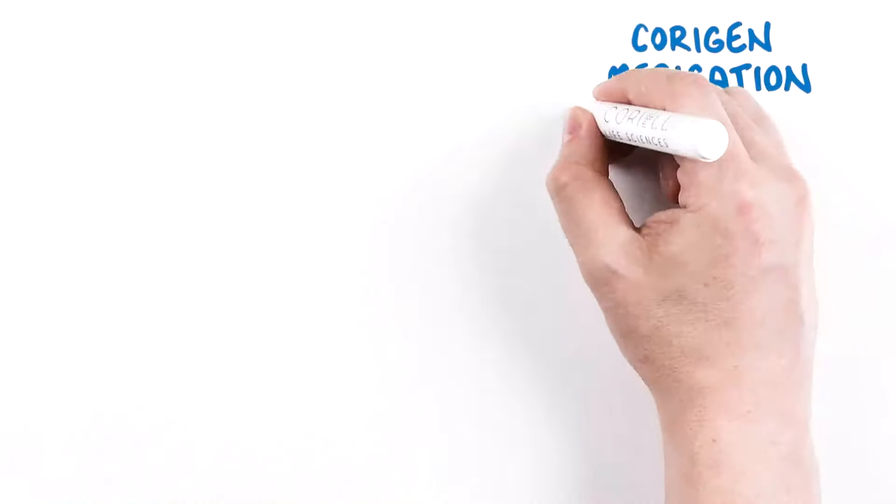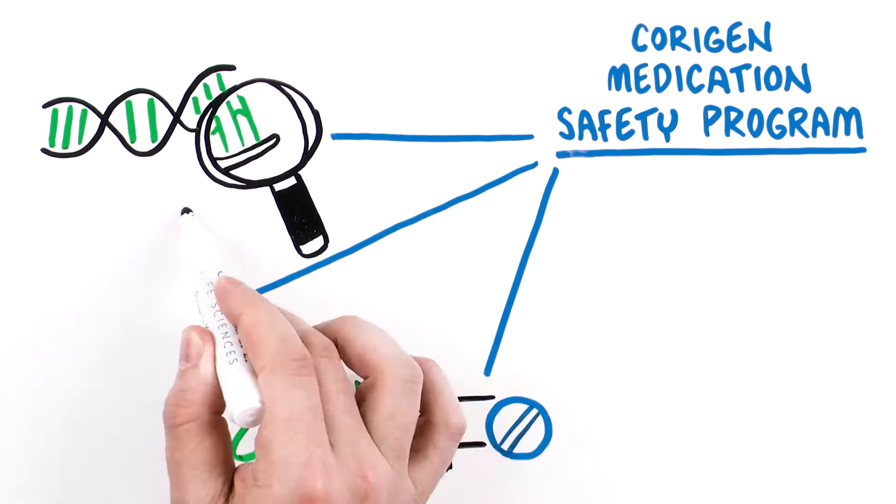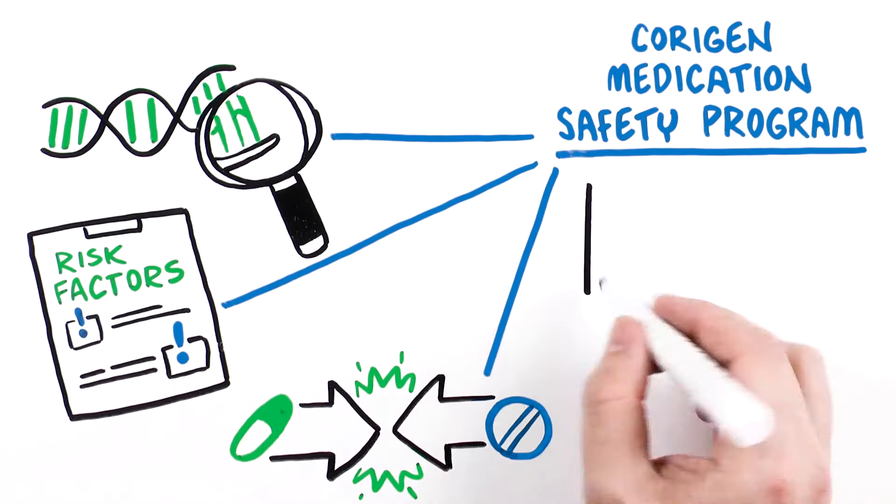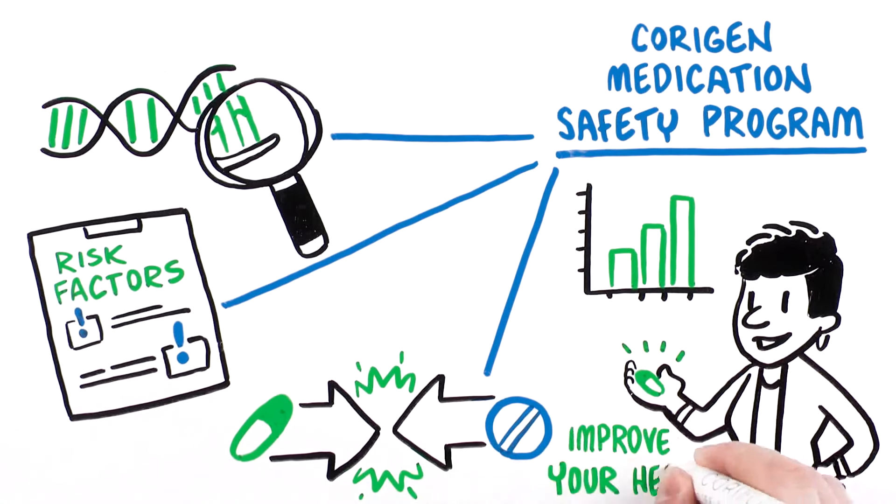The Coriigen Medication Safety Program looks at your DNA, drug interactions, and many other risk factors, all at the same time to greatly increase the chances that the drugs you take will improve your health.